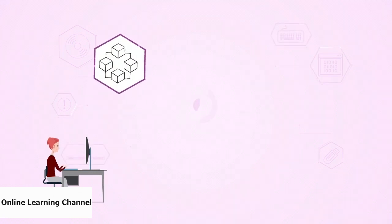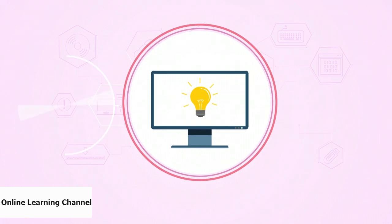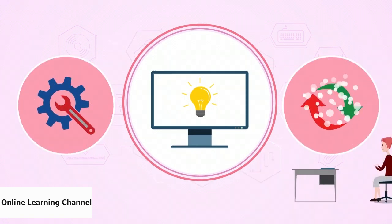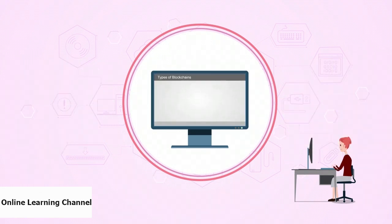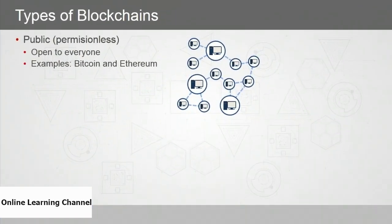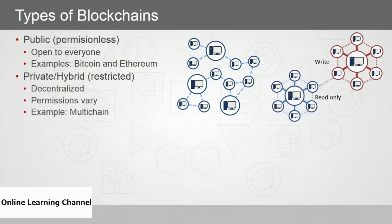There are really four main types of blockchains. The first is a public or permissionless blockchain, which is open to everyone — users are generally anonymous. This is the most well-known type because both Bitcoin and Ethereum use public blockchains. The next type is private or hybrid — a restricted blockchain where users must have permissions to participate. A private blockchain is still decentralized, but access control is provided and permissions can vary. An example is Multichain, an open-source blockchain organizations can deploy.